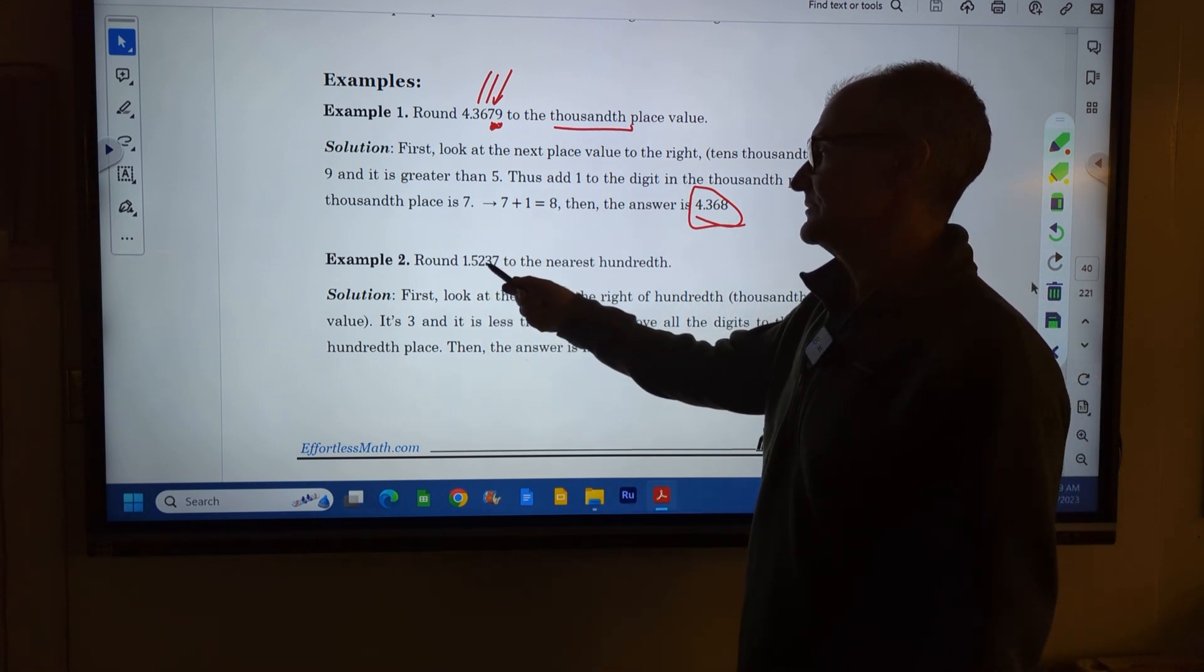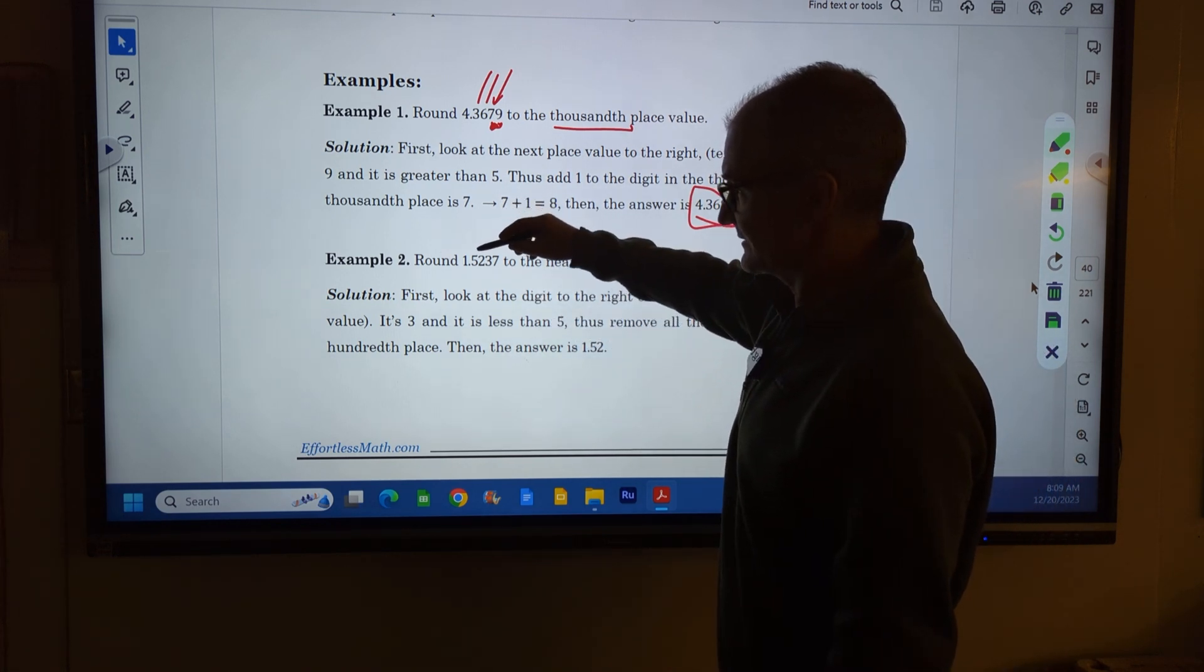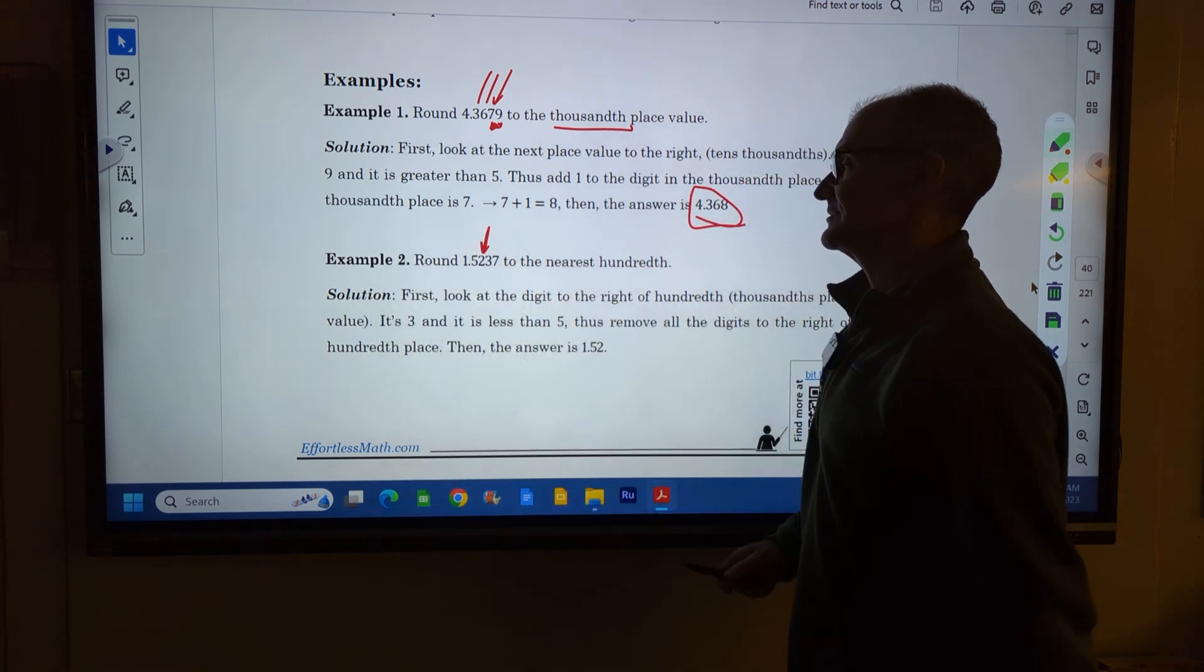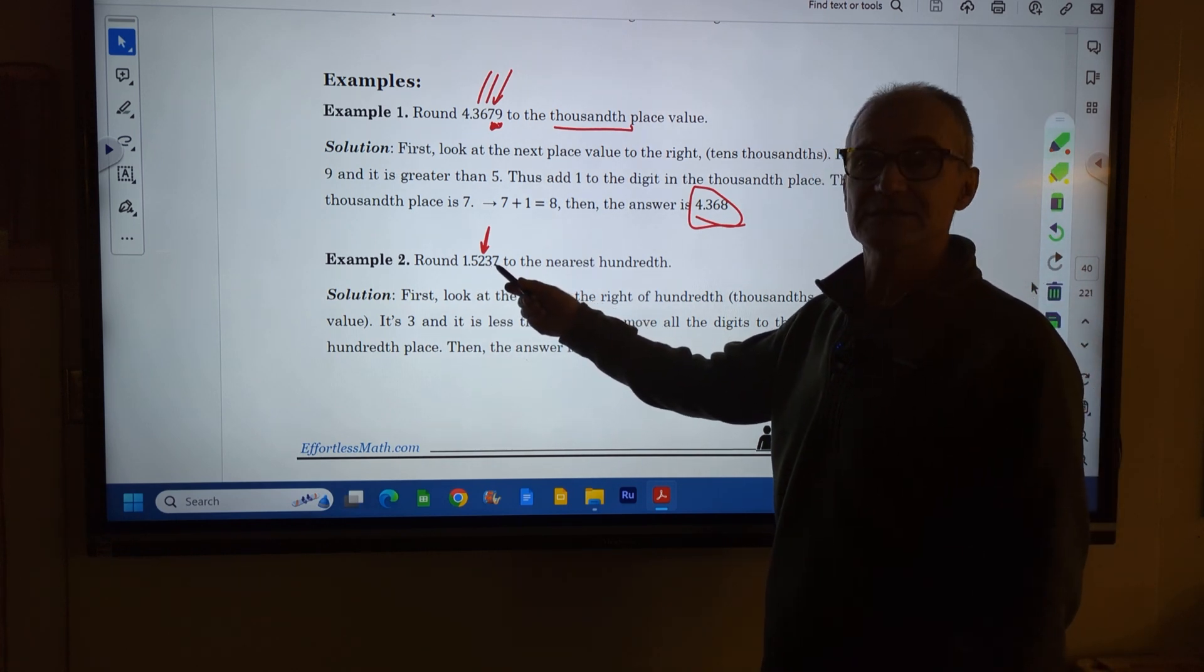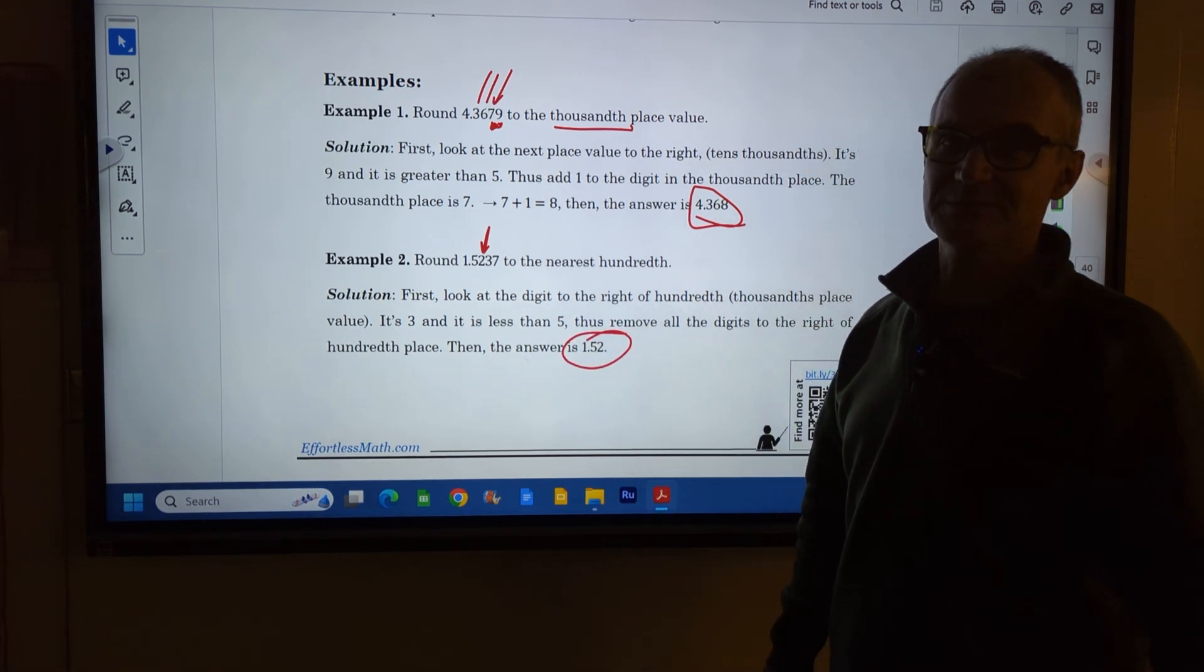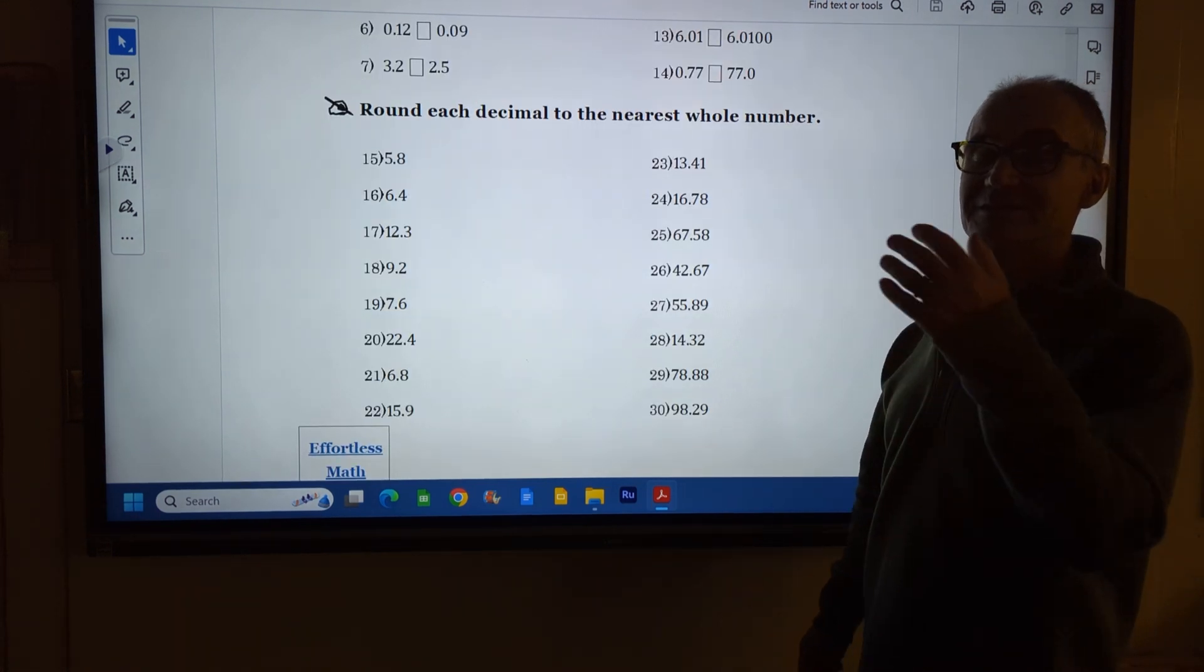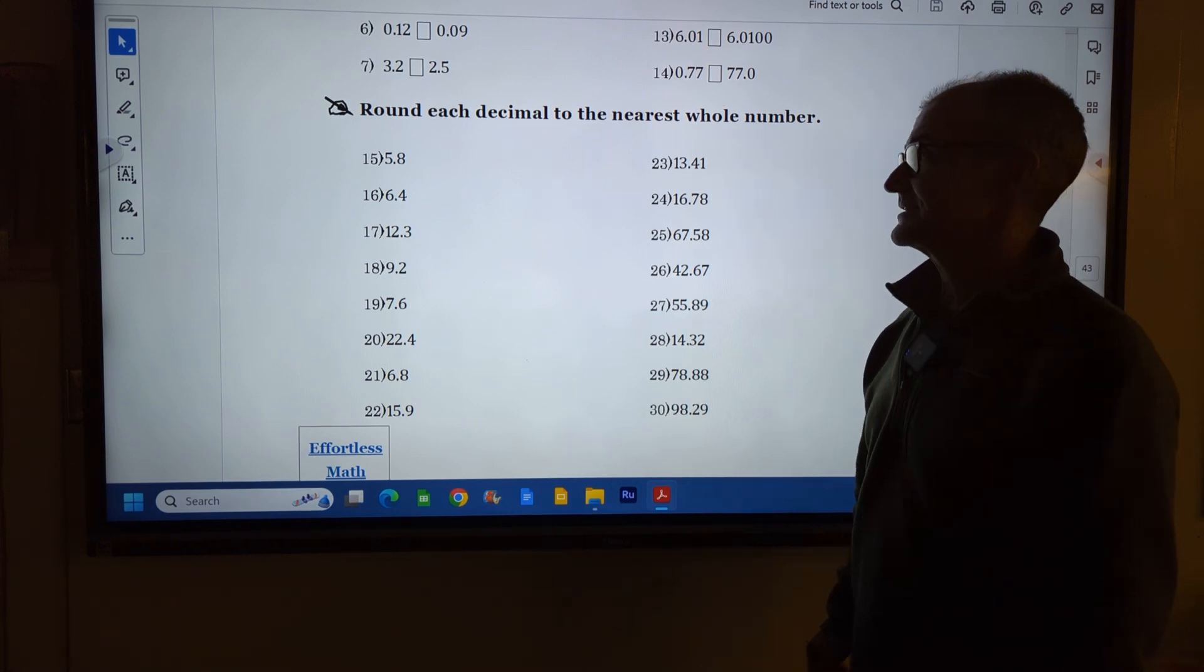Round 1.5237 to the nearest hundredths place. Tenths, hundredths. So I'm only going to have two spaces after the decimal point. I look to the right of it, it's a 3, lower than 5. So I'm going to round down and I end with 1.52. Let's do some practice problems. Pause the video, do the problems before I do them. Unpause the video, then watch how I do them.